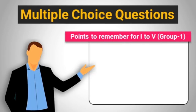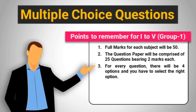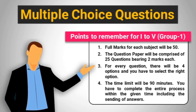Points to remember for classes 1 to 5: 1. Full marks for each subject will be 50. 2. The question paper will be comprised of 25 questions bearing two marks each. 3. For every question, there will be four options and you have to select the right option. 4. The time limit will be 90 minutes. You have to complete the entire process within the given time, including the sending of answers.